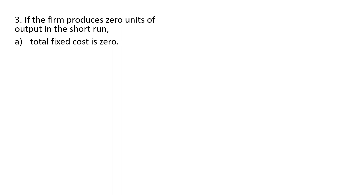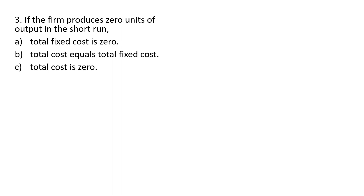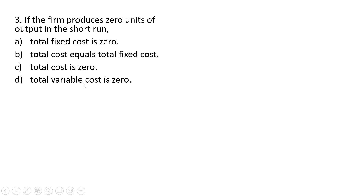Question three: if the firm produces zero units of output in the short run, total fixed cost is zero — that is incorrect. Total cost equals total fixed cost — that is correct, since total variable cost will be zero with zero units of output, so total cost simply equals total fixed cost. Total cost is zero — that is incorrect. Total variable cost is zero — that is correct. So the correct answers here are B and D.